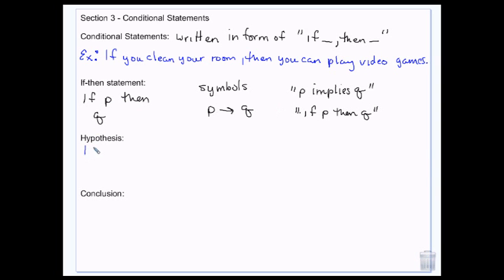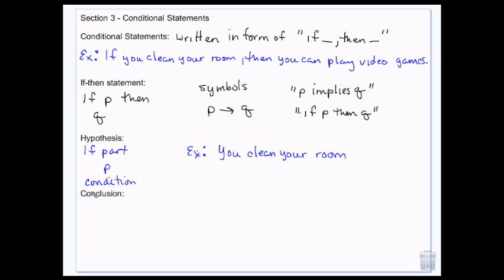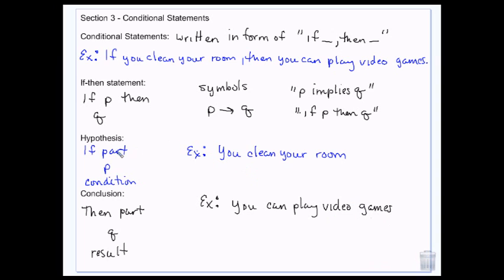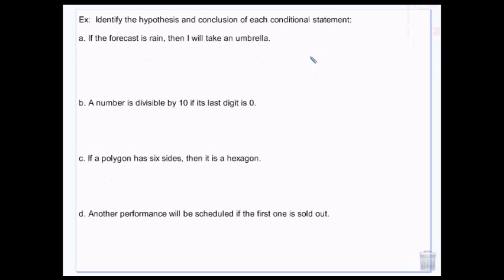The hypothesis of the statement is the if part — the P. This is the condition. In my example, the hypothesis is 'you clean your room.' The conclusion is the then part — the Q — and this is the result. In my example the conclusion is 'you can play video games.' So the if part is the hypothesis and the condition, and the then part is the conclusion, which is the result.